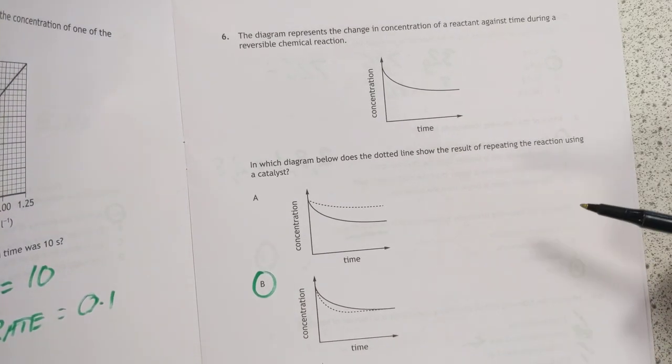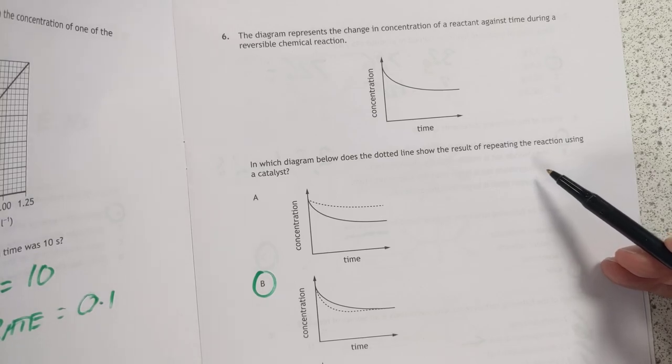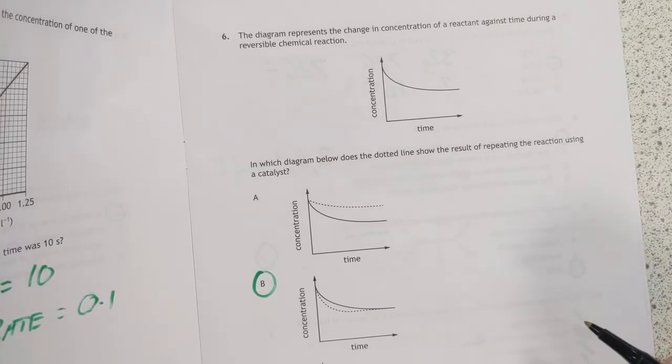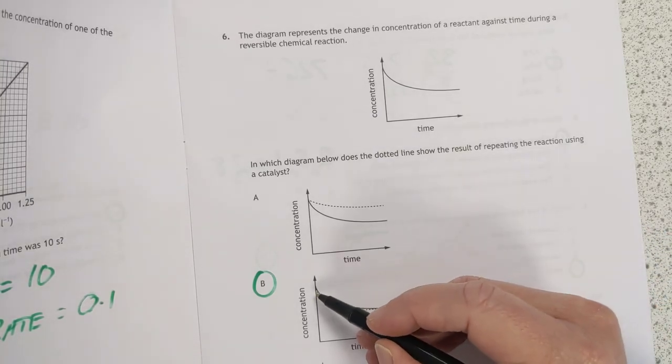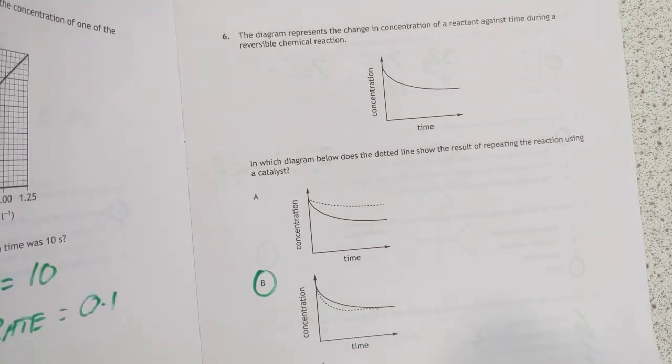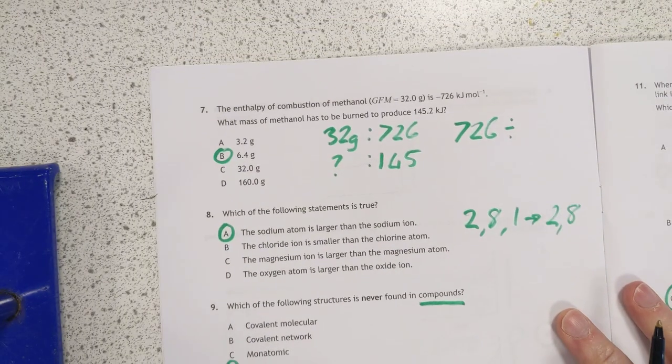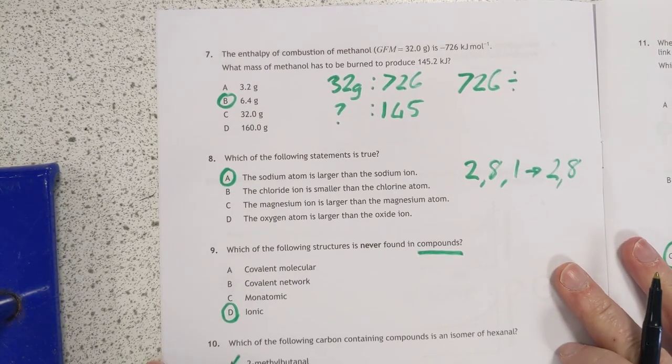Number six, reversible reaction. The dotted line using a catalyst. Well, the only difference the catalyst will make is the equilibrium will be achieved faster. So it is in fact B, it'll crash down here, it'll end up with the same concentration at the equilibrium point. Number seven, are we on camera? Try and be professional, hey.